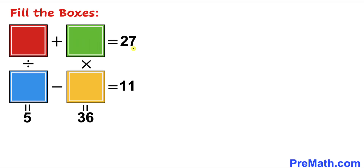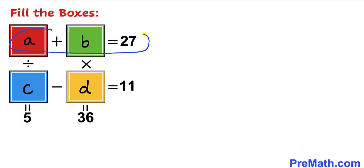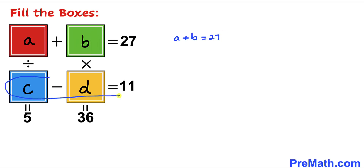The first thing we'll do is label these boxes. I'm going to label the red box as A, the green box as B, the blue box as C, and the yellow box as D. Focusing on the horizontal boxes: A plus B equals 27, and C minus D equals 11.